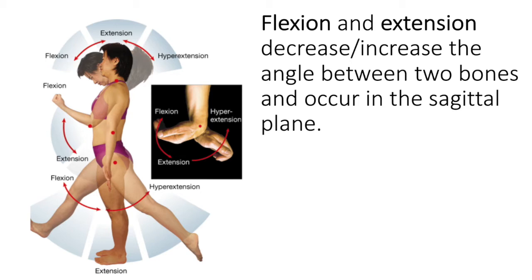If you were going to flex the knee, in the gym you might do a hamstring curl, where you lie on a bench and put the weight behind your ankle and bring that weight towards your buttocks — that is knee flexion. When you bring that weight back to neutral, returning to standard anatomical position, that would be knee extension.